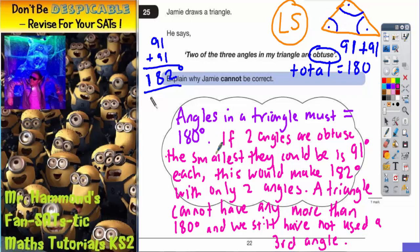So angles in a triangle can't go over 180 degrees. If two angles are obtuse, the smallest they could be is 91 degrees each. This would make 182 degrees with only two angles. If a triangle can't have any more than 180, we still have not used a third angle. Then basically Jamie cannot be correct.